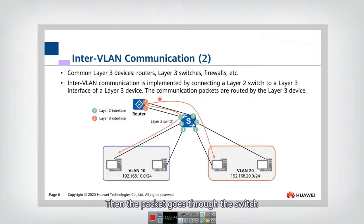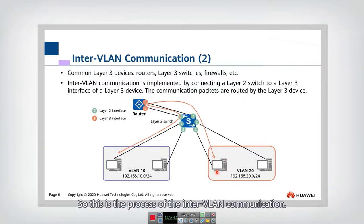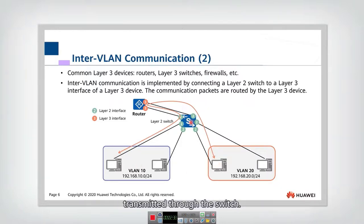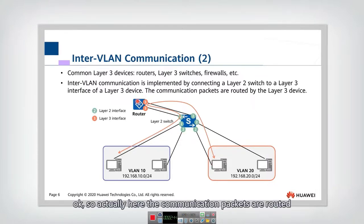The packet then goes through the switch and finally reaches the other VLAN and the destination PC. This is the process of inter-VLAN communication. The packets cannot be directly transmitted through the switch — they must go up to the layer-3 devices. The communication packets are routed by the layer-3 device.